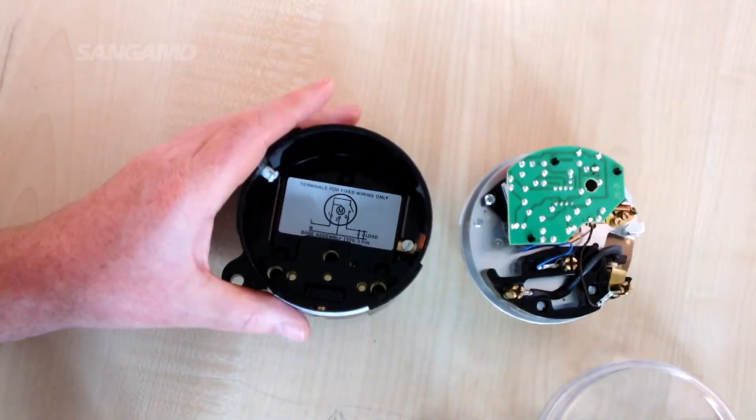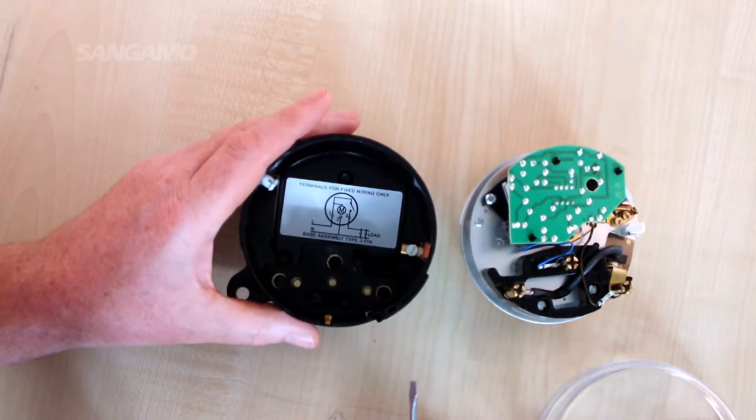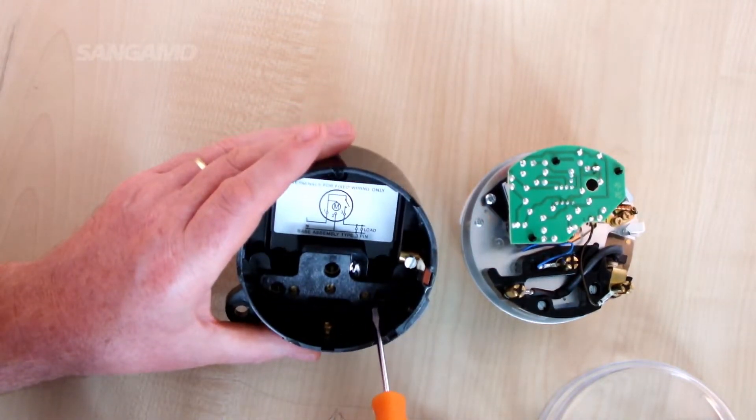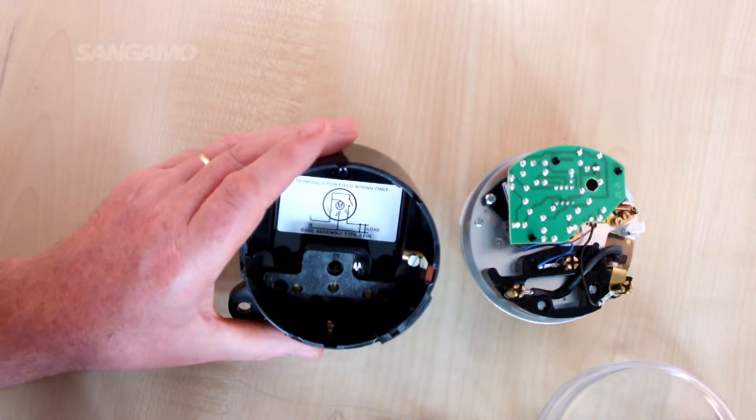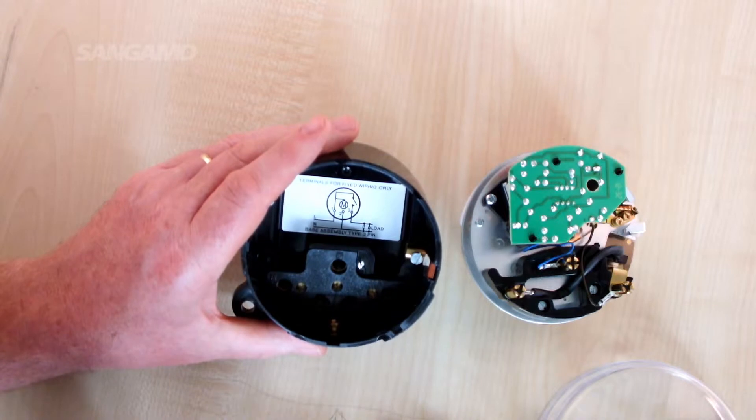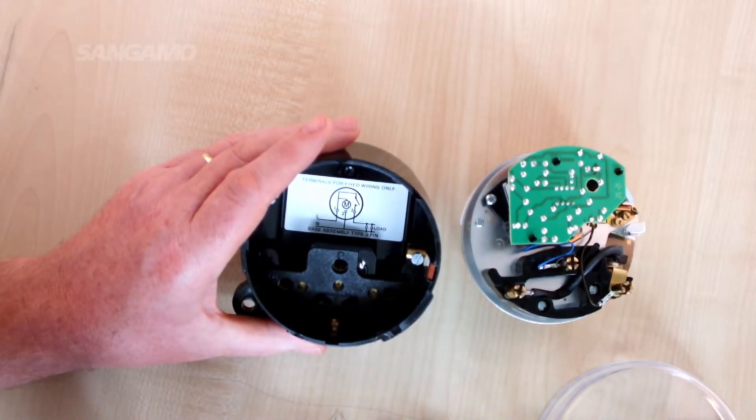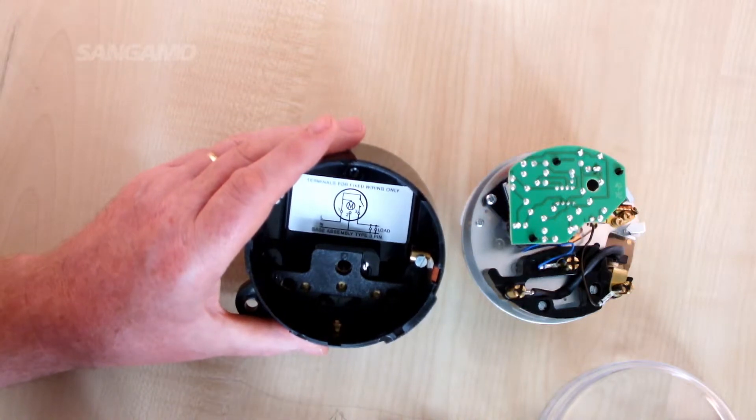You can see the connection pins at the back of the mechanism and the terminal positions in the base. These are all held to a very tight tolerance to ensure good contact is made, and therefore you need to use a bit of force to separate the two items.